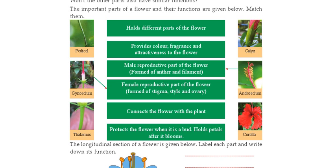Next to corolla is the androecium. See here — this part is the androecium. The androecium is the male reproductive part of the flower.